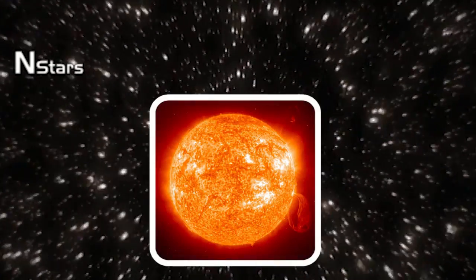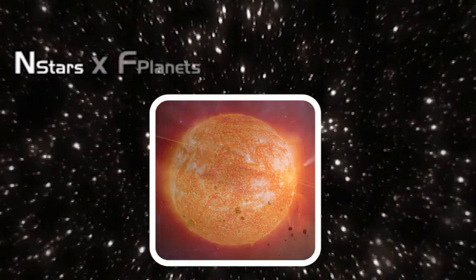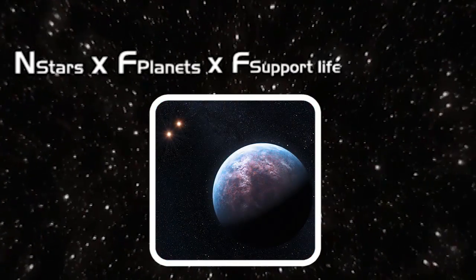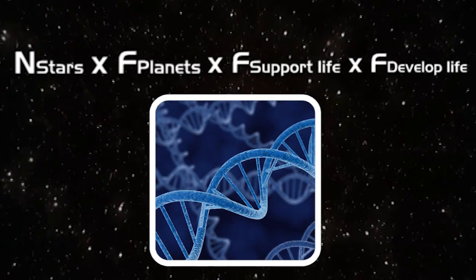We take the number of stars, times the fraction of these that have planets, times the fraction of these planets that can support life, times the fraction of those which actually develop life.